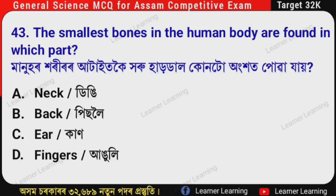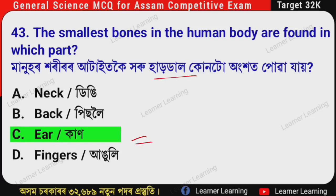Next question: The smallest bones in the human body are found in which part? (Assamese: Manuhar hori rar atat koi horu hurdle konto aungkho t pahar jai?) The correct option is Option C — Ear (kan). The smallest bones in the human body are found in the ear.